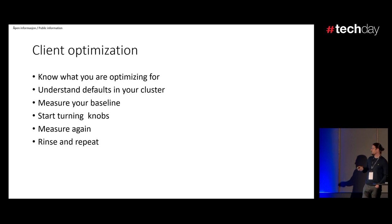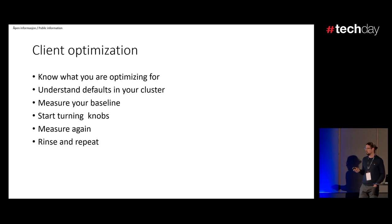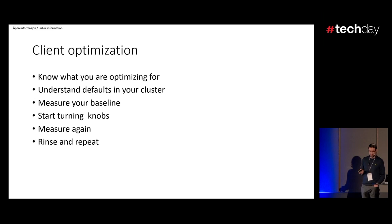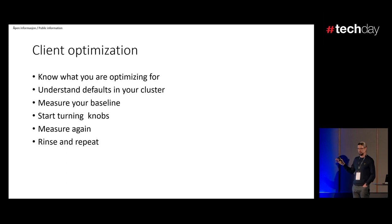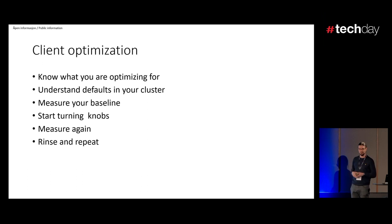The reason I mentioned metrics is because of client optimization. By default, Kafka is optimized for latency, but different teams have different requirements. In order to optimize your Kafka client, there are many knobs you can turn. First, you need to know what you're optimizing for. Then you need to understand the defaults in the cluster, because the operations team has set certain defaults based on what they thought was the most common use case. Then you need to start measuring your baseline — that's where the metrics come in. Check your metrics, start turning the knobs, and see which direction you're moving: towards the latency you need, or towards durability, and so on.